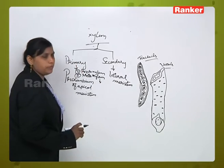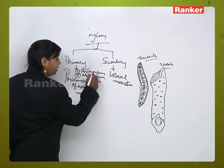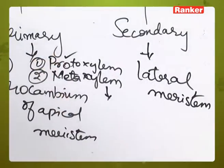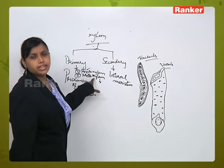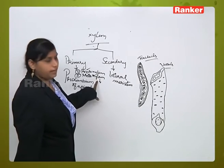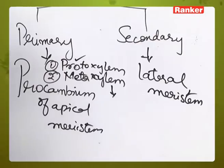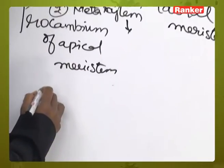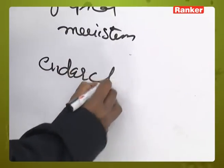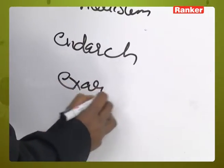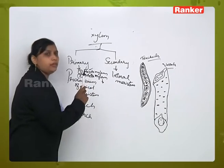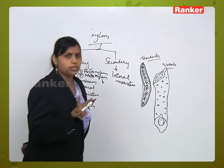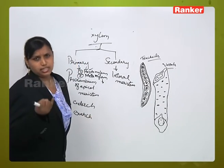What is proto xylem and meta xylem? As the name itself indicates, proto means first formed xylem tissue is called proto xylem and latter formed xylem tissue is called meta xylem. There are two conditions here, called endarch and exarch condition. When we are talking with reference to proto xylem and meta xylem, we come across two words: endarch and exarch.